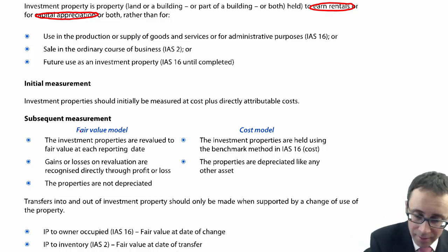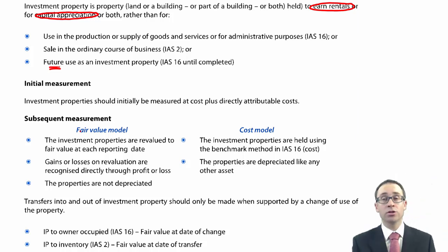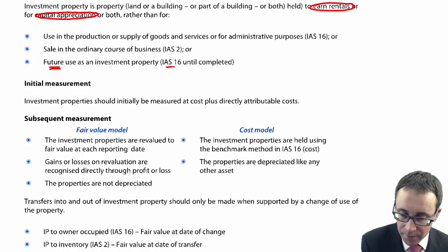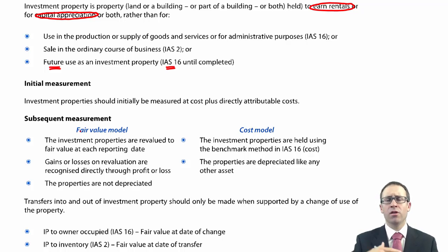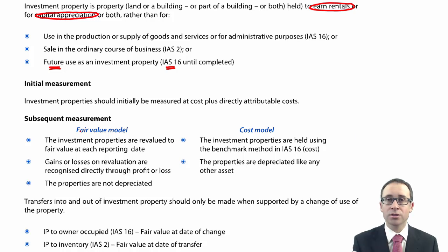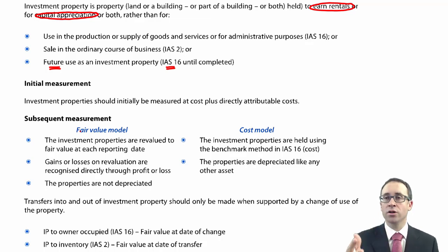Also, if you are still constructing a building that will be used as investment property in the future, it is not investment property until it's complete. While under construction, you use IAS 16 — following the normal rules regarding purchase price of all materials, directly attributable costs of getting it into its location and condition ready for use, labour costs, and any design costs. Once it's complete and the cost is established, that cost then transfers into investment property.